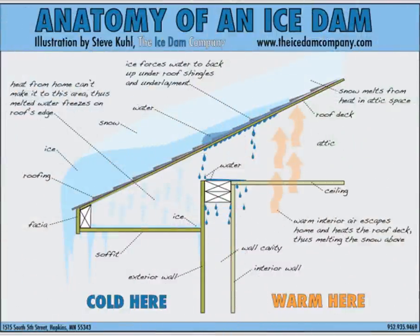So to start off, exactly what is an ice dam? I've got a great diagram from Steve Kuhl over at the Ice Dam Company, showing how an ice dam works. Ice dams typically occur when you have a lot of snow on a roof and overnight temperatures in the 15 to 25 degree range — that's kind of the sweet spot for ice dams.